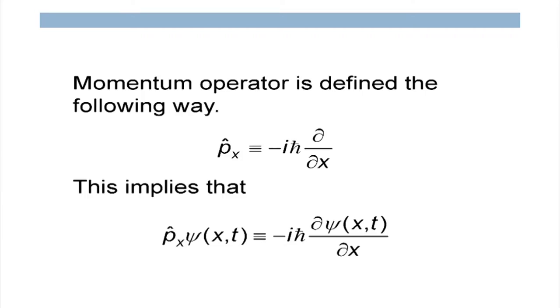I don't normally give an argument for why this operator is defined this way — I only say it is required for all laws to be consistent. Then we define the energy operator, which is similar except there is no minus sign: it is iℏ(∂/∂t). When it operates on ψ(x,t), the outcome is iℏ(∂ψ/∂t). This is what we call the energy operator.